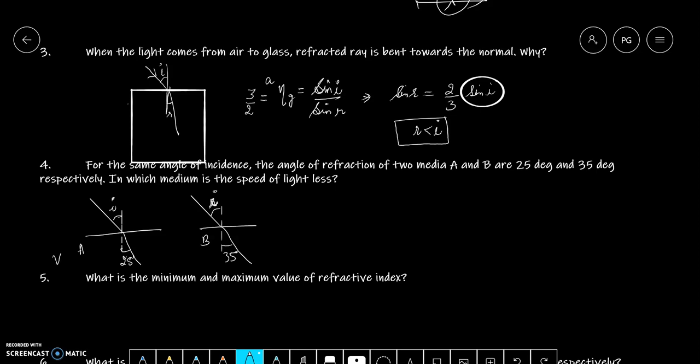Let's suppose A medium may speed of light hai VA, B medium may VB. Then, A medium ki baat karein. Toh, refractive index of medium A with respect to vacuum, it means we are talking about absolute refractive index, is equal to sin i upon sin of 25 degree, which is equal to speed of light in vacuum divided by speed of light in medium A. Similarly for B, it is equal to sin i upon sin of 35 degree, which is equal to speed of light in vacuum divided by speed of light in medium B.